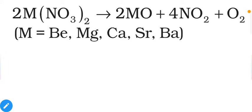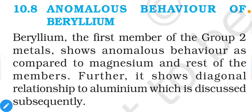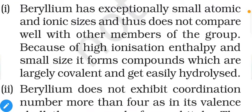M represents all alkaline earth metals. Just like the first member of group 1, the first member of group 2 is also anomalous. Beryllium, the first member of group 2, shows anomalous behavior compared to magnesium and the rest of the members. It further shows a diagonal relationship with aluminium, which is discussed subsequently.